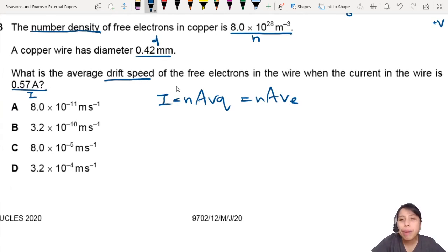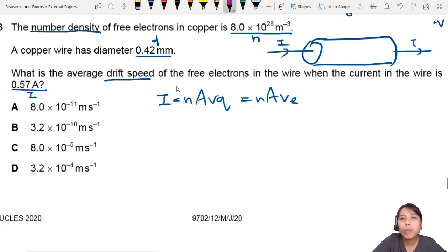So what's happening is you have a conductor, like something like this, and you have a current coming in and current coming out. But if you really zoom in inside, you will see all these negative charge carriers that are just drifting along, moving at a certain velocity. That's what I call drift velocity or drift speed.